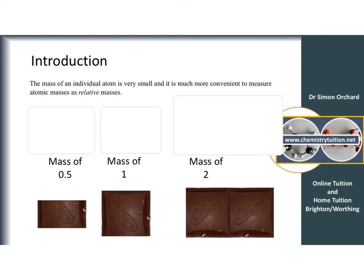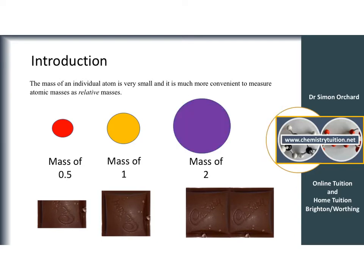In a similar way we can talk about atoms. If I picked an atom and said it has a mass of 1, then an atom with half the mass would be 0.5, and one that is double the size would have a mass of 2. Again, no units — this is purely a scale for comparing the different masses of atoms.